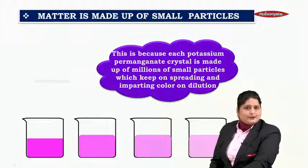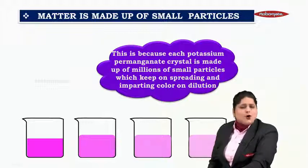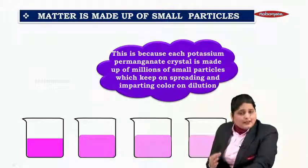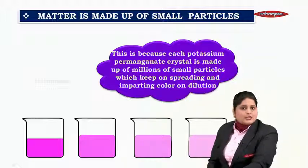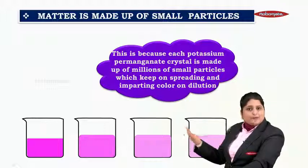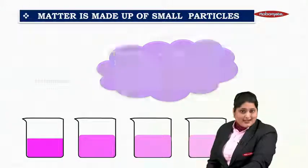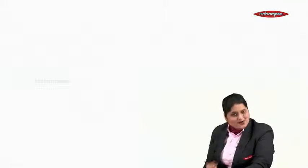So here we confirm that each and every particle of potassium permanganate comprises of millions and millions of atoms of potassium permanganate, and therefore you get this color. Let's move ahead with another property of matter in next module.